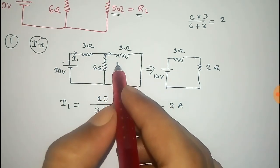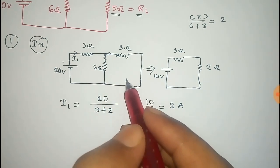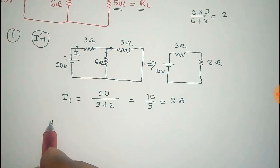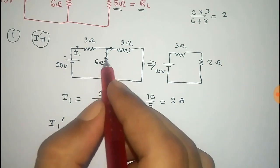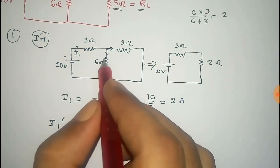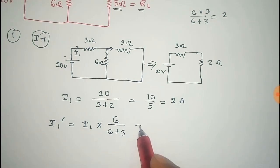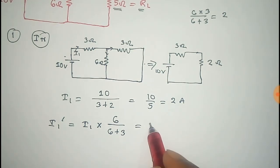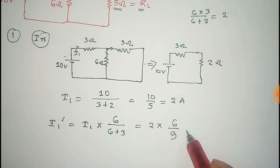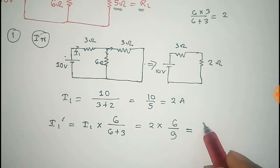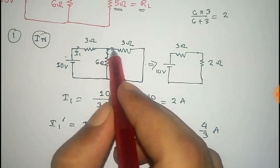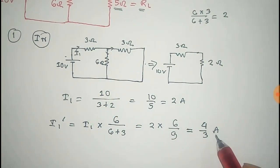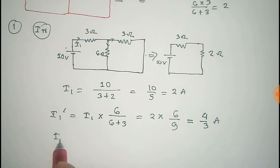We have to find the current in this loop, so we use the current divider rule. Using the current divider rule, the current through this loop is i1 prime, which equals i1 multiplied by the other resistor (6 ohm) divided by the sum of the two resistors (6 plus 3). So that is 2 amperes into 6 divided by 9, which equals 4/3 amperes. This is the short circuit current, also called the Norton current, equal to 4/3 amperes.